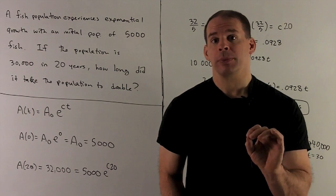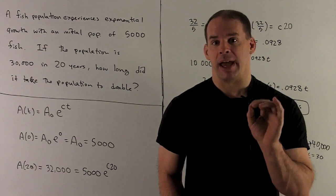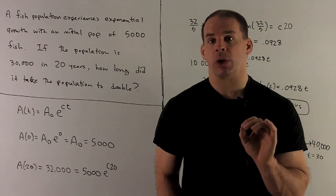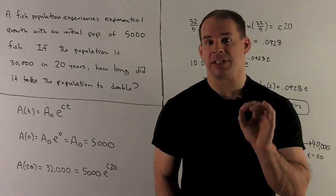So, exponential growth - we write down our equation: A(t) equals A₀ e to the constant c times t.